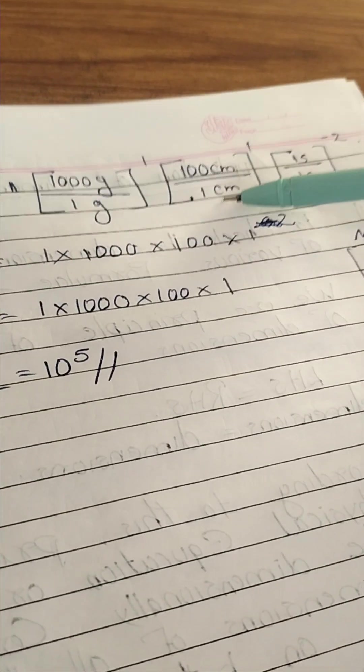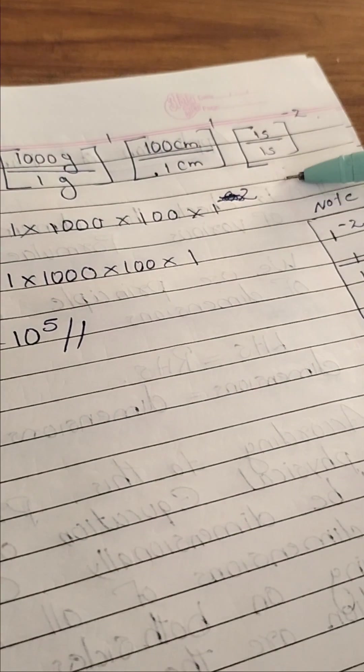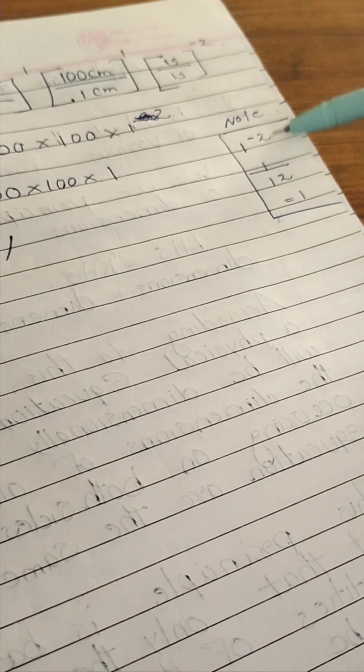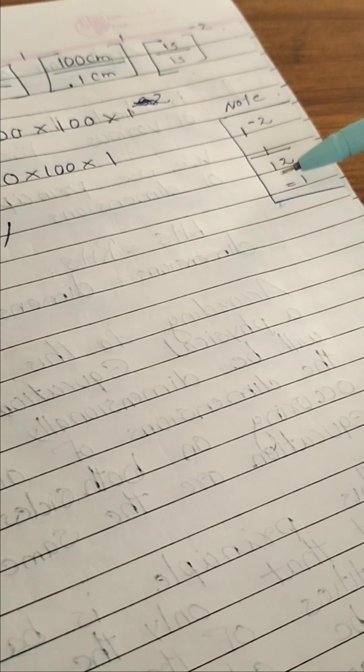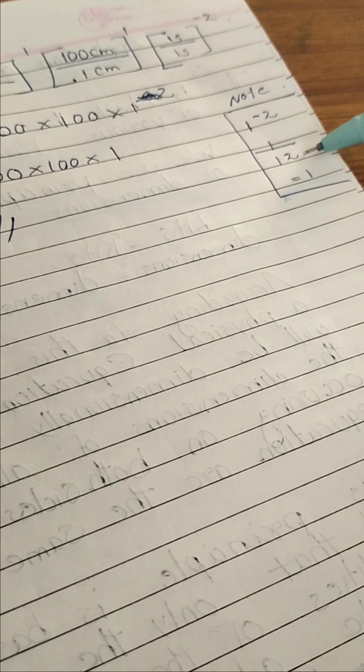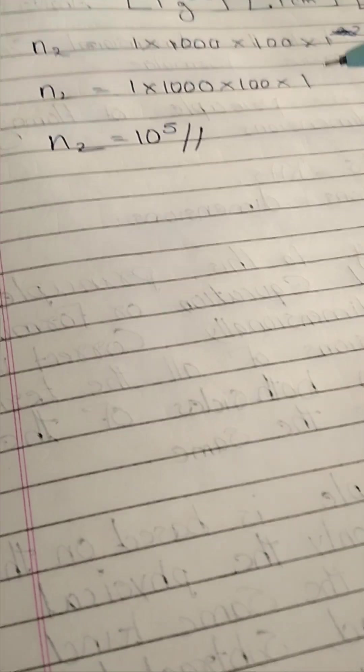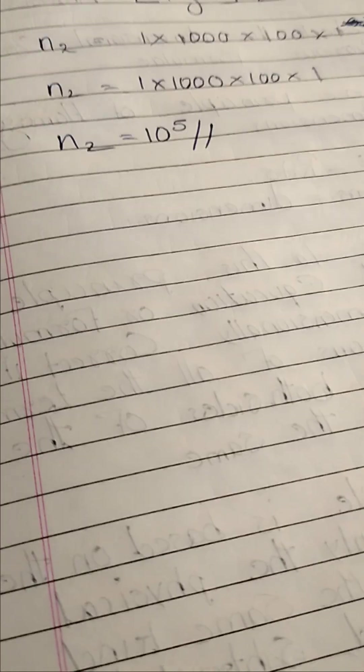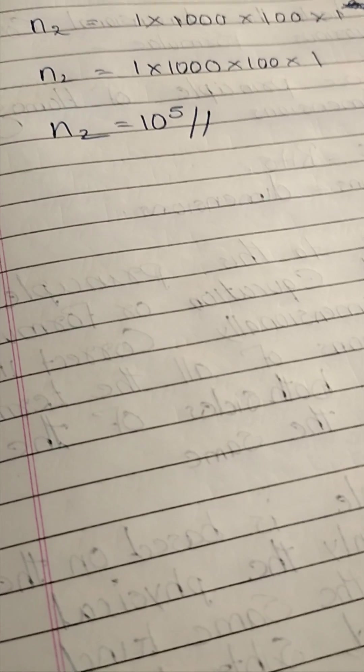Thousand by 1, thousand. Hundred by 1, hundred. Then 1 by 1 raised to minus 2. Listen my dears. What is the meaning of 1 raised to minus 2? 1 by 1 raised to 2. 1 raised to 2 value 1. 1 by 1 value 1. So we can write 1. So how many zeros are here? 5 zeros. So N2 value is 10 to the power 5.